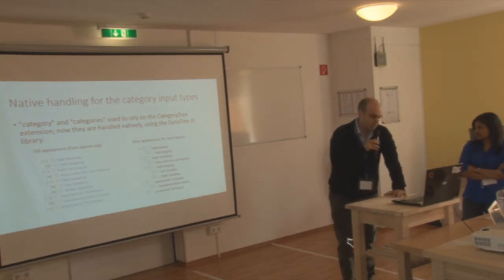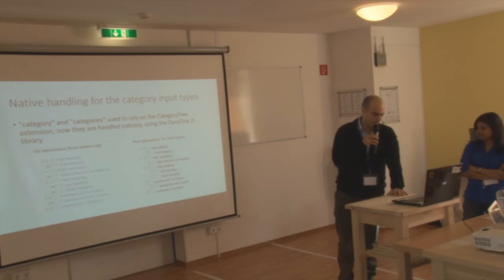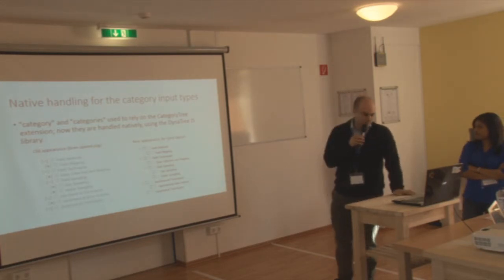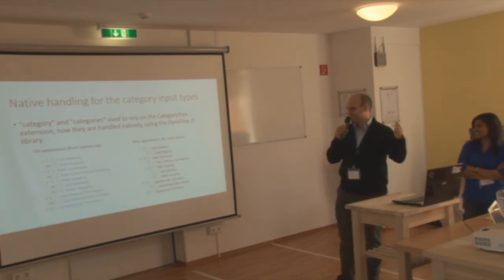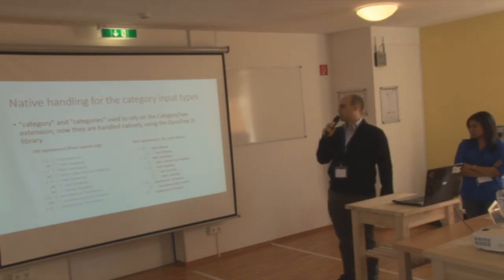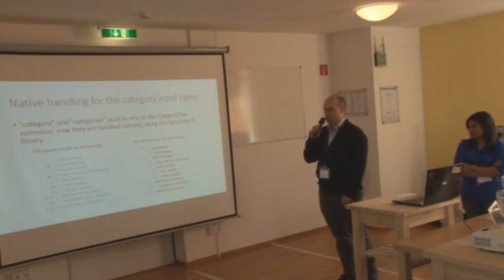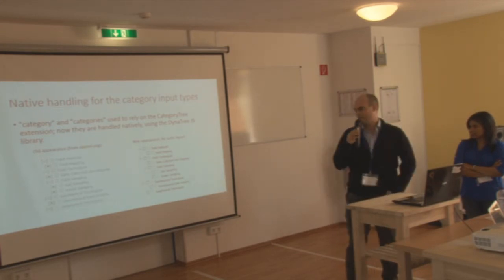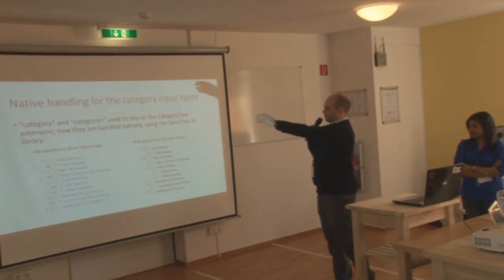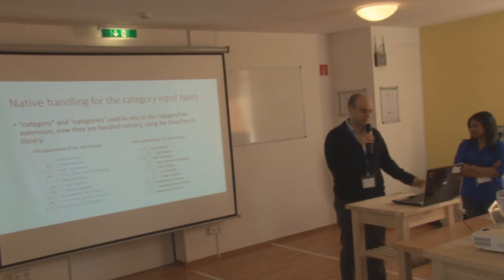The native handling was improved for category input types — apologies for forgetting the contributor's name. It used to require the Category Tree extension, but now it's done natively using a JavaScript library, looks a little nicer, and works better. You can keep expanding even with 10 or 20 levels of subcategories. The category and categories input types are for selecting one or more categories for a given page — good for hierarchical data.